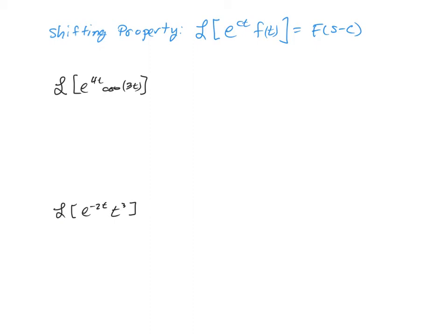So for our first example, e to the 4t times the cosine of 3t, you really have to identify the cosine's Laplace transform first, and then just shift that by s minus 4, which is the c number in this problem.